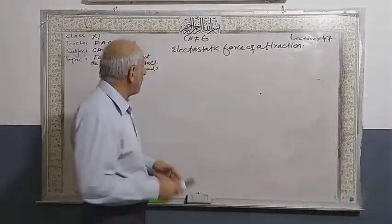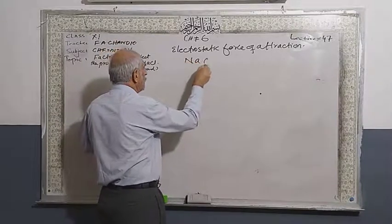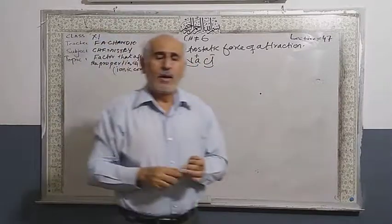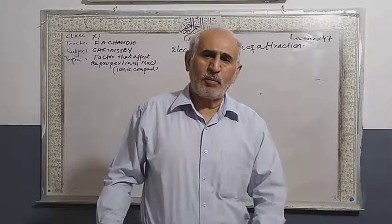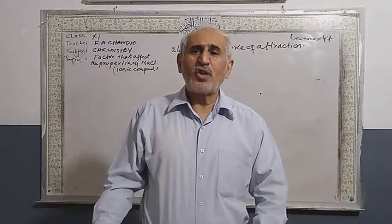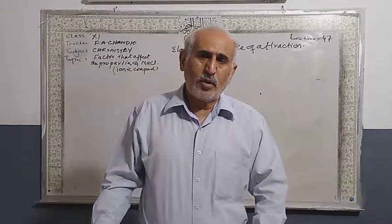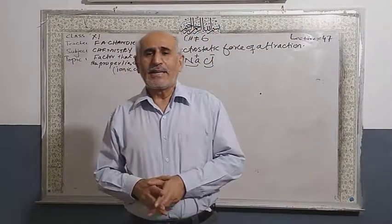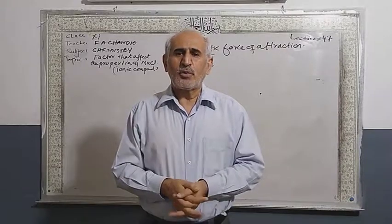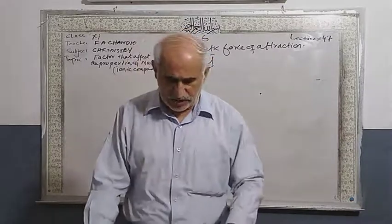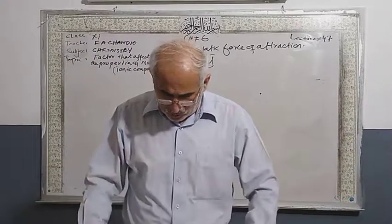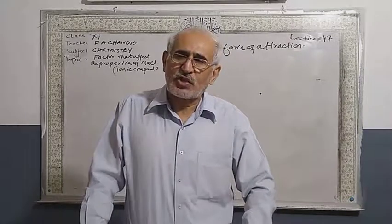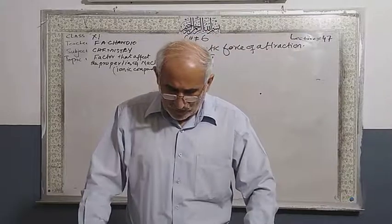For example, in sodium chloride, sodium has a positive charge (cation) and chloride has a negative charge (anion). Cations are formed by the loss of electrons. The minimum amount of energy required to remove an electron from the isolated gaseous state of the valence shell to make a positive charge is called ionization energy.